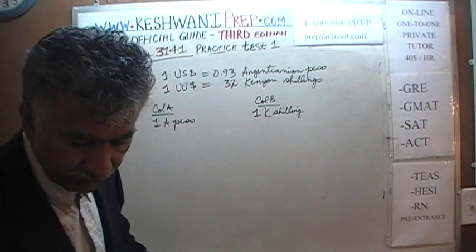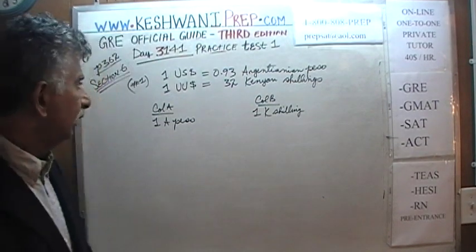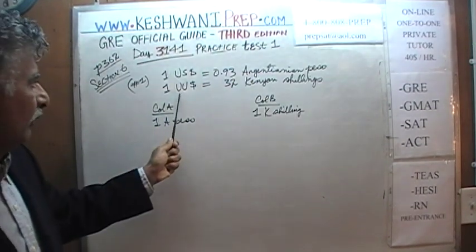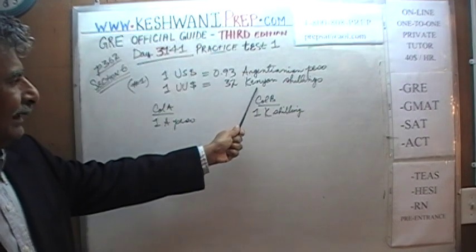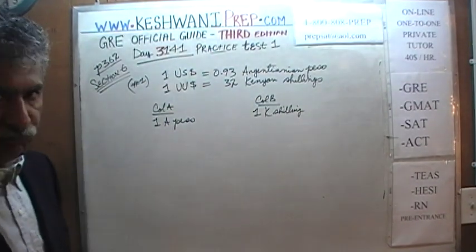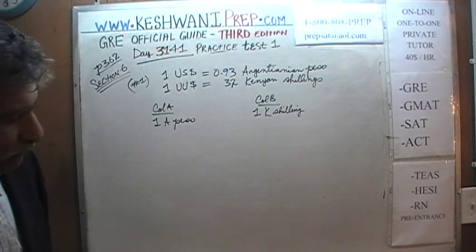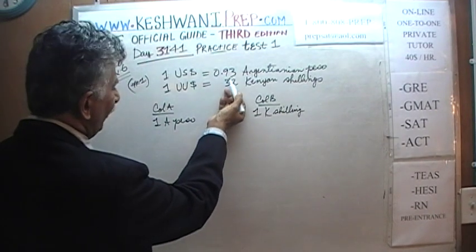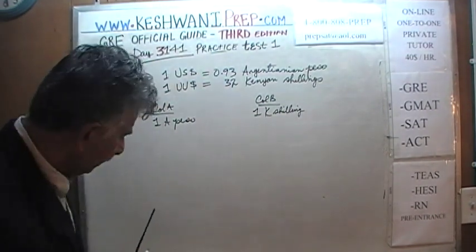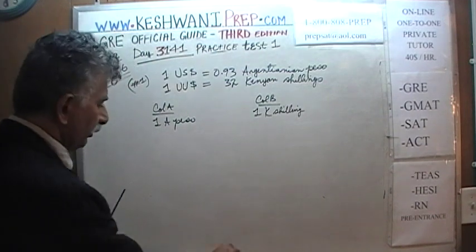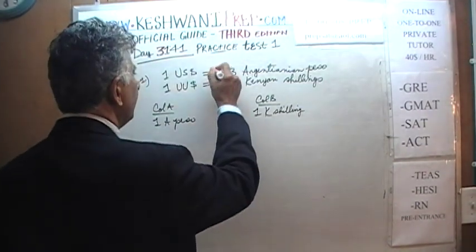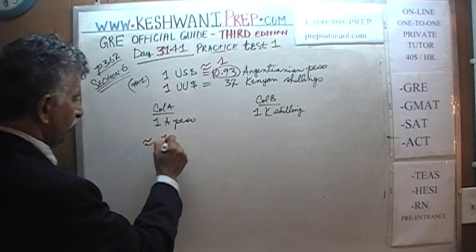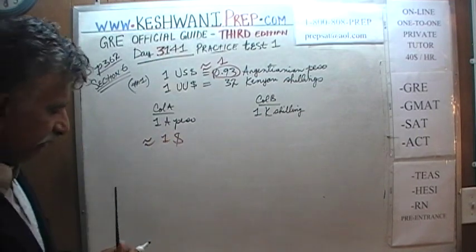Problem number 1 is already on the blackboard. We are told that 1 US dollar equals 0.93 Argentinian Peso, and further that 1 US dollar equals 32 Kenyan Shillings. We have to compare two values. We can see that 0.93 is almost 1, which means 1 Argentinian Peso is almost equal to 1 dollar.